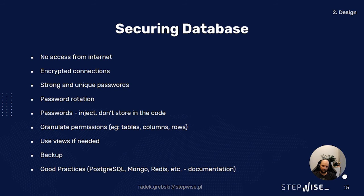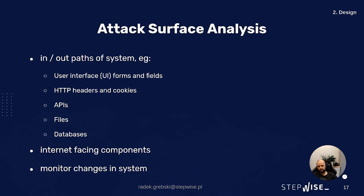At the design stage, we should also analyze the attack surface, which is simply the in and out paths of our system — for example, the user interface, HTTP headers and cookies, APIs, files, databases, and everything that faces the internet. Once we do that, we should monitor changes in our system because the system changes often and we don't want any insecure code to slip into our system.